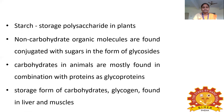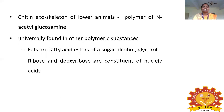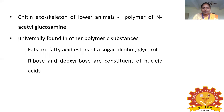Glycogen is the storage form of carbohydrate in animals, found in the liver and muscles. The structural polysaccharide in animals is chitin, which is comprised of a polymer of N-acetyl glucosamine. Ribose and deoxyribose are constituents of nucleic acids and are universally found in other polymeric substances.